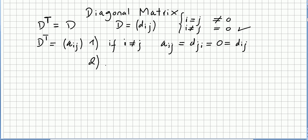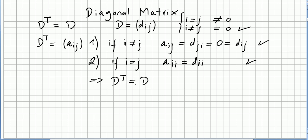Second case: Aij will be equal to Dij. So in both cases they are the same, which implies that the diagonal transpose is equal to Dij. That concludes the proof: the transpose of a diagonal matrix is the matrix itself. Of course this is totally obvious.